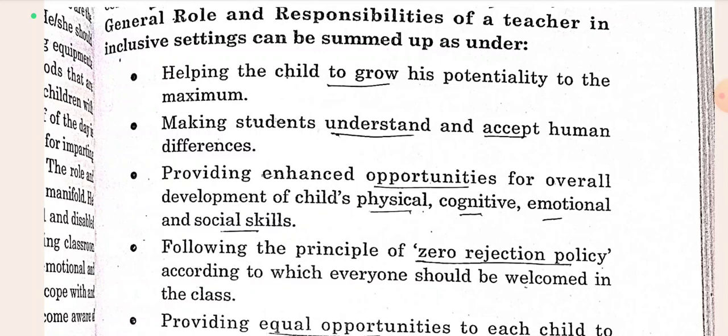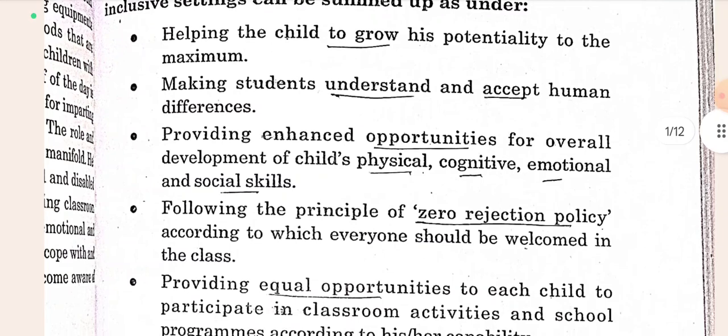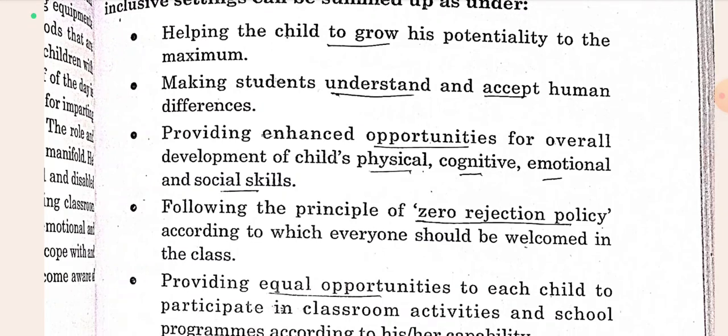Second, making students understand and accept human differences. Bachche ko human differences ki baare mein samjhaana aur unhye accept karna. Providing enhanced opportunities for overall development of child's physical, cognitive, emotional and social skills. Bachche ko enhanced opportunity provide karna ta ki apni physical, cognitive aur emotional social skill ko develop kar sake — means bachche ka overall development ho sake.